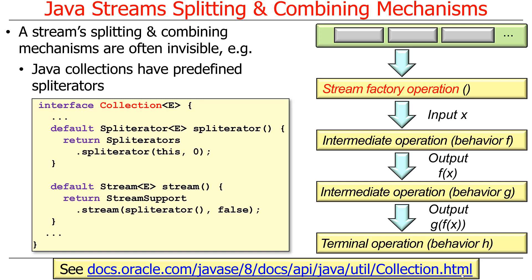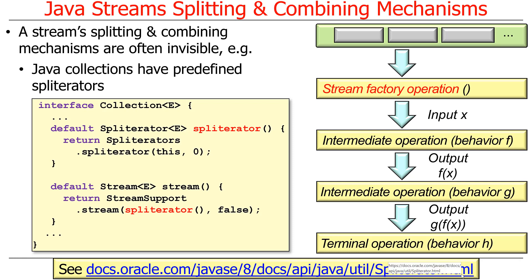Java collections come with a bunch of predefined spliterators defined on them. Recall that Collection is an interface — it's the root of all the various classes in the Java collections framework. In the Collection interface, there's a default method called spliterator, and different implementations can override this for different refinements like ArrayList, LinkedList, or HashMap. You can see in the sequential stream factory method there's actually a use of the spliterator method to cause a spliterator to chunk the collection up into stream elements — so it's often the case you don't have to do anything other than use what comes with the Java collections framework.